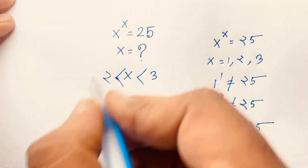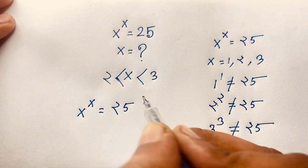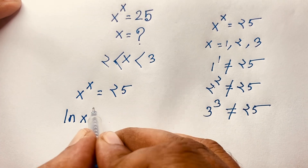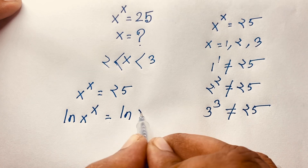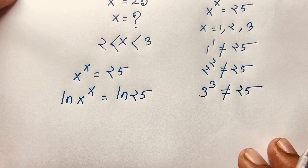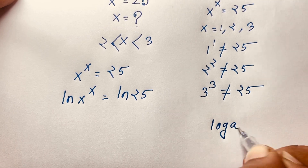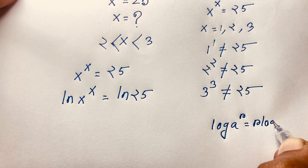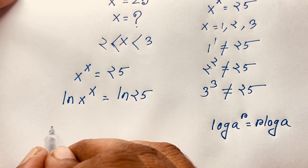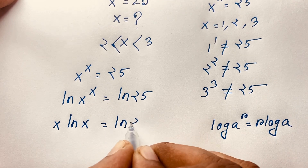Our question is x to the power x is equal to 25. Now, I apply the natural log to both sides. So, ln of x to the power x is equal to ln 25. According to the natural log law, log a to the power r is equal to r times log a. According to this law, the exponent moves in front, so x times ln x is equal to ln 25.